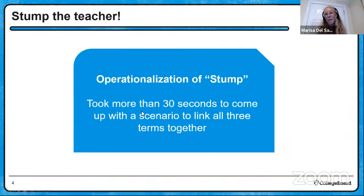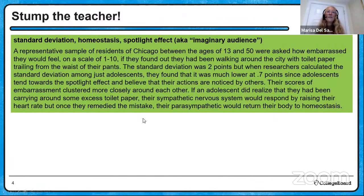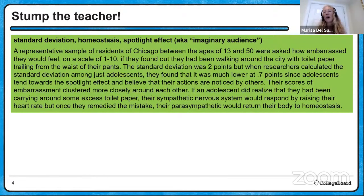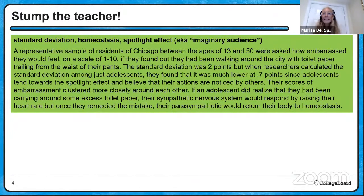I'm going to operationalize Stump. What does it mean to Stump the Teacher? It means it took me more than 30 seconds to come up with a scenario to link them all together. The first one: standard deviation, homeostasis, and spotlight effect — otherwise known as imaginary audience. Standard deviation is a measure of variability, how spread apart data is. Homeostasis is bringing your body back to a balanced state. And the imaginary audience or spotlight effect is the idea that many adolescents have that you are always in the spotlight, that people are watching you, so every little good or bad thing you do is highlighted.